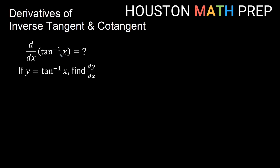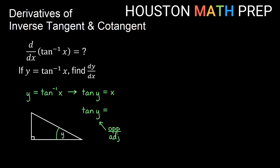So if we want to find the derivative of inverse tangent of x, we think of y being the inverse tangent of x and we want to find dy/dx. Remember, another way to write y equals inverse tan of x is that tangent of y equals x. This is telling us about a right triangle — tangent of y means we can think of y as an angle, and tangent is opposite over adjacent. So if we think of x as x over 1, then the opposite side is x and the adjacent side is 1.